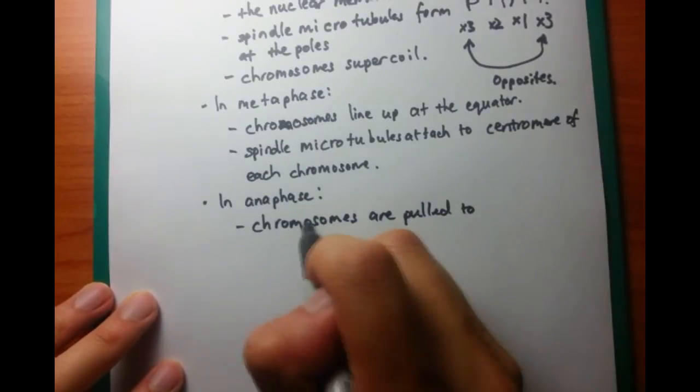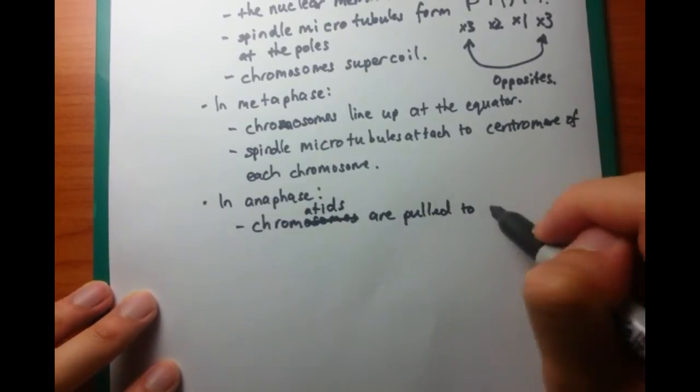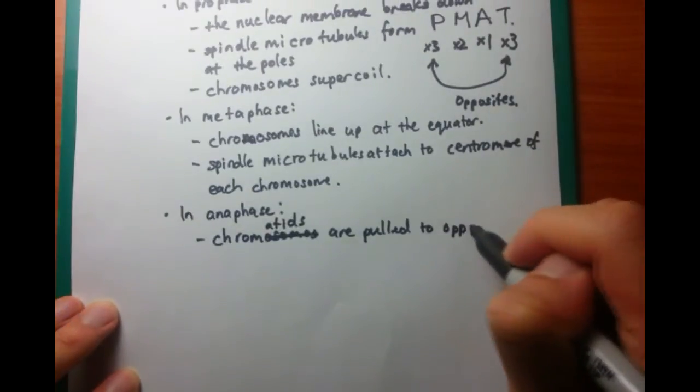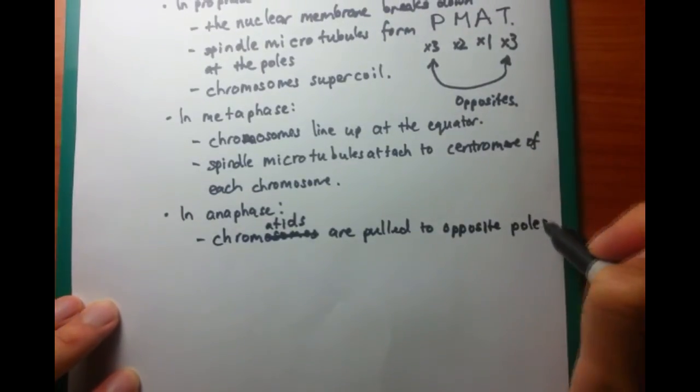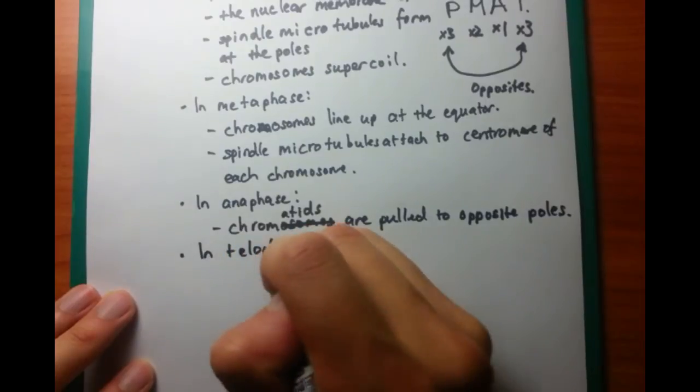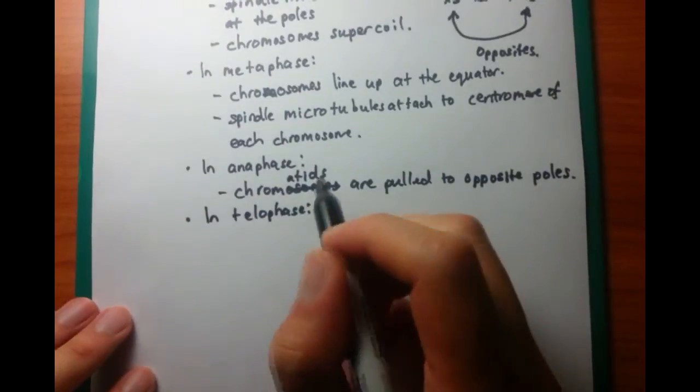remember that telophase is the opposite of prophase. So there are three things which occur here. Let's look back up. So before, the nuclear membrane broke down. So in telophase, the nuclear membrane is going to reform. That's the first thing that's going to happen.